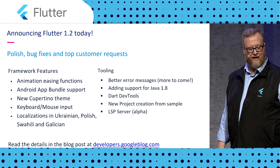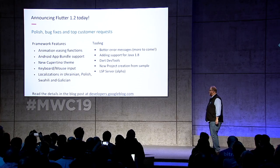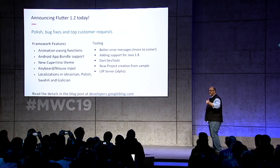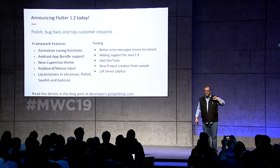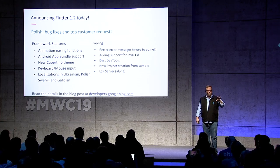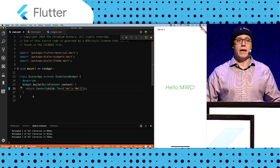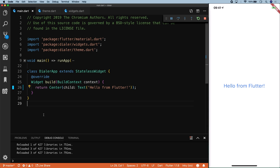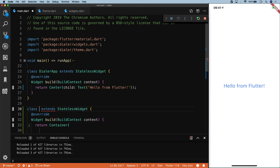I mentioned Flutter 1.2, which comes with a number of framework features including animation easing functions and Android app bundle support — and those features come from third parties, not the Flutter team. Now I'm going to see if I can, in the next 19 and a half minutes or less, put together a phone dialer. I'm going to create my first widget — a stateless widget — and call it my dialer.